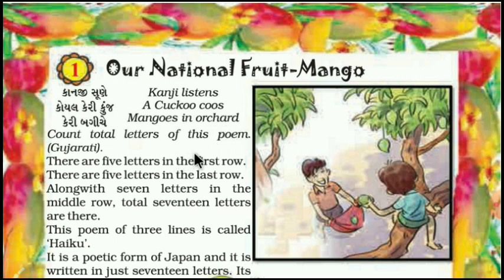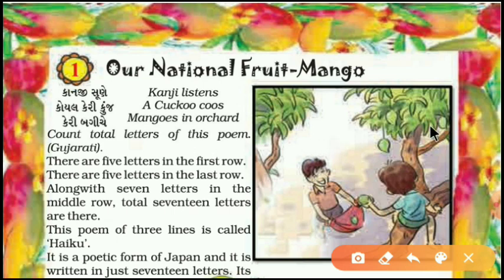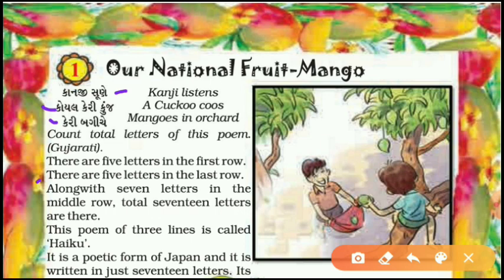Count the total letters of this poem. There are five letters in the first row — Kanji, Sune — total five letters. Then there are five letters in the last row — Keri, Bagiche, In — total five letters. Along with seven letters in the middle row: Koyal, three; Keri, plus two, five; Kunj, plus two, seven. Total seven letters are there in the middle row.